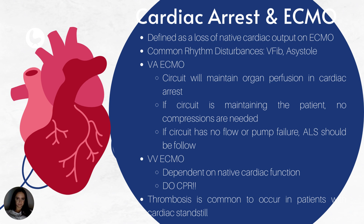A cardiac arrest on an ECMO machine is defined by a loss of native cardiac output on ECMO. Common rhythms are V-fib, asystole, or ventricular standstill. There is a difference between VA and VV ECMO in this scenario. On VA ECMO, the circuit maintains organ perfusion during cardiac arrest — so it is not necessary to do compressions, because the ECMO is doing that work.